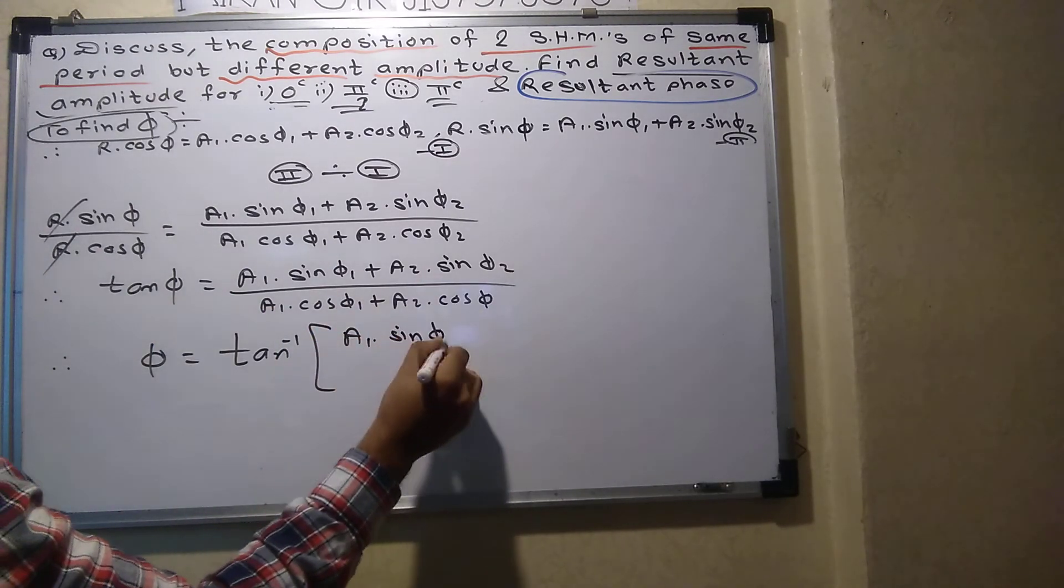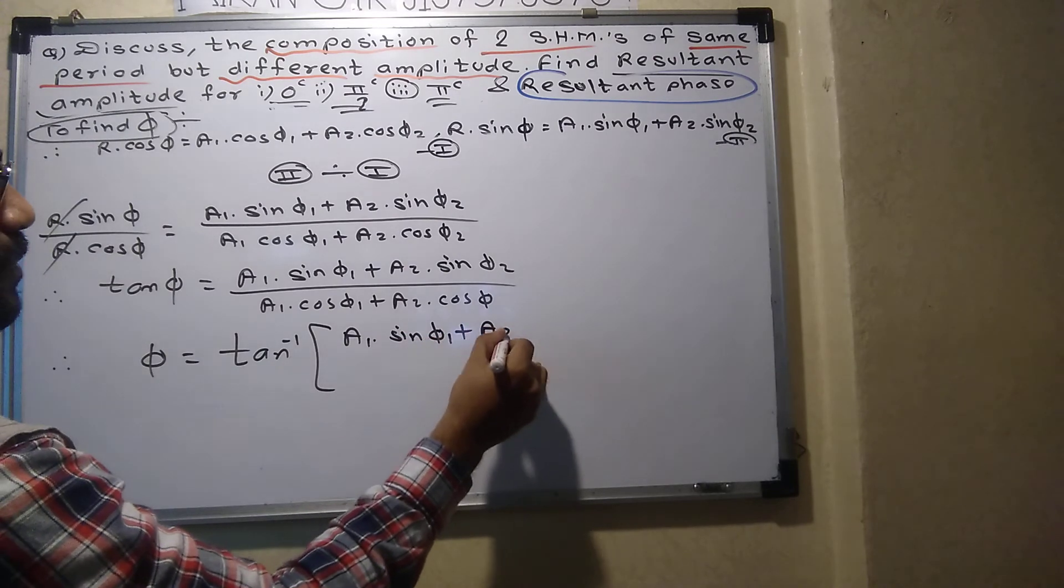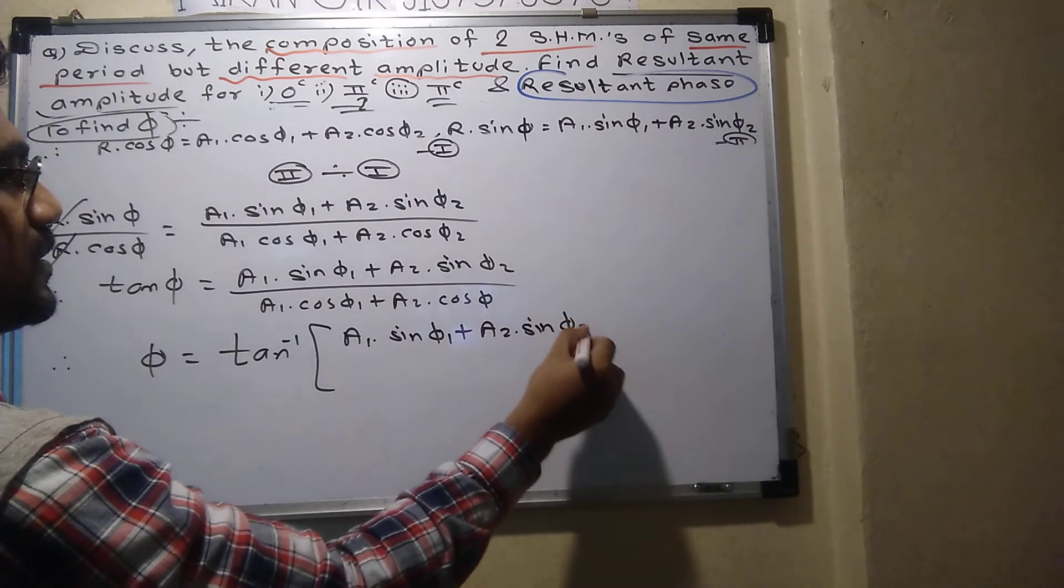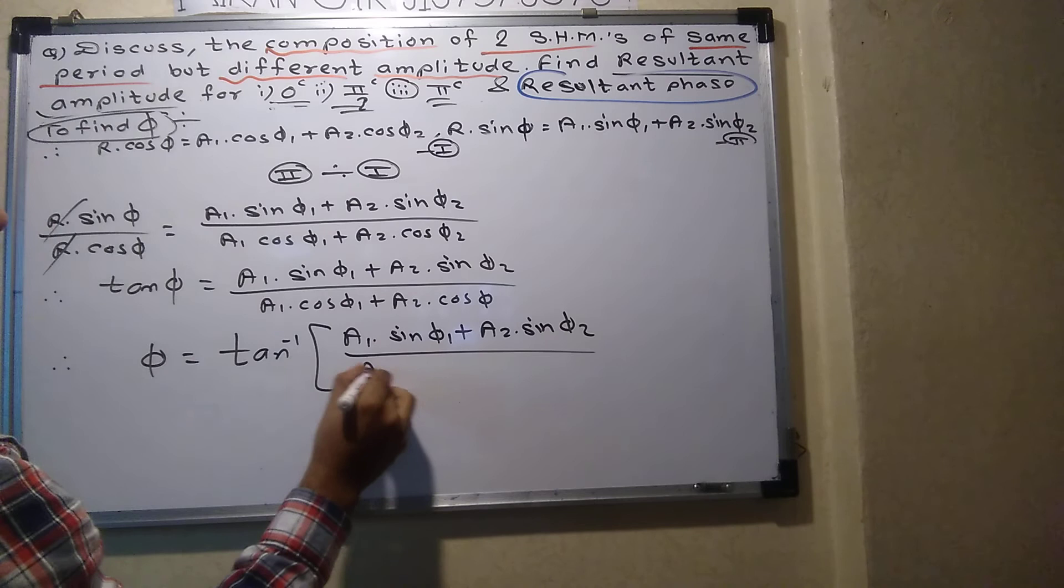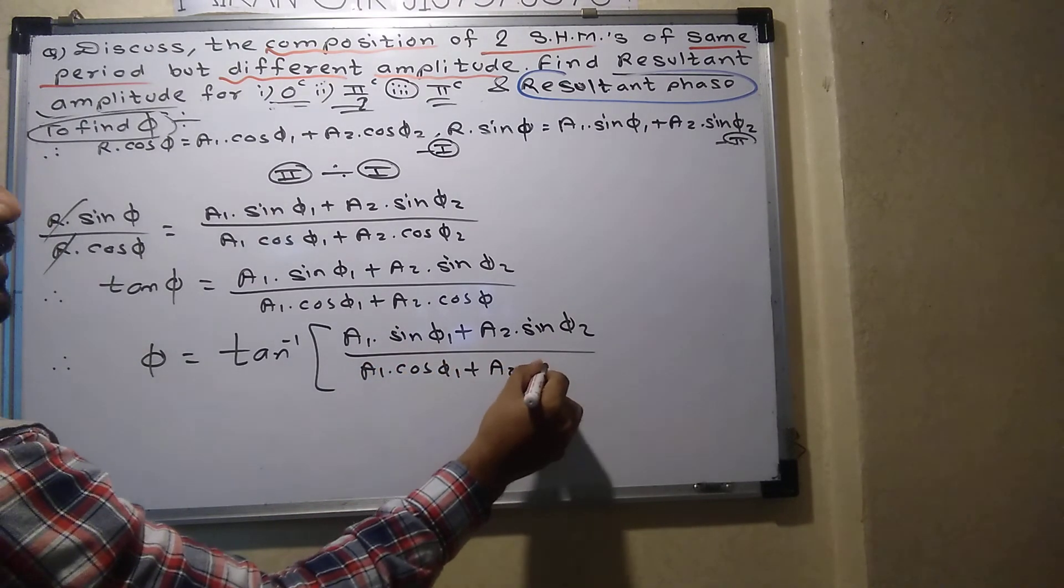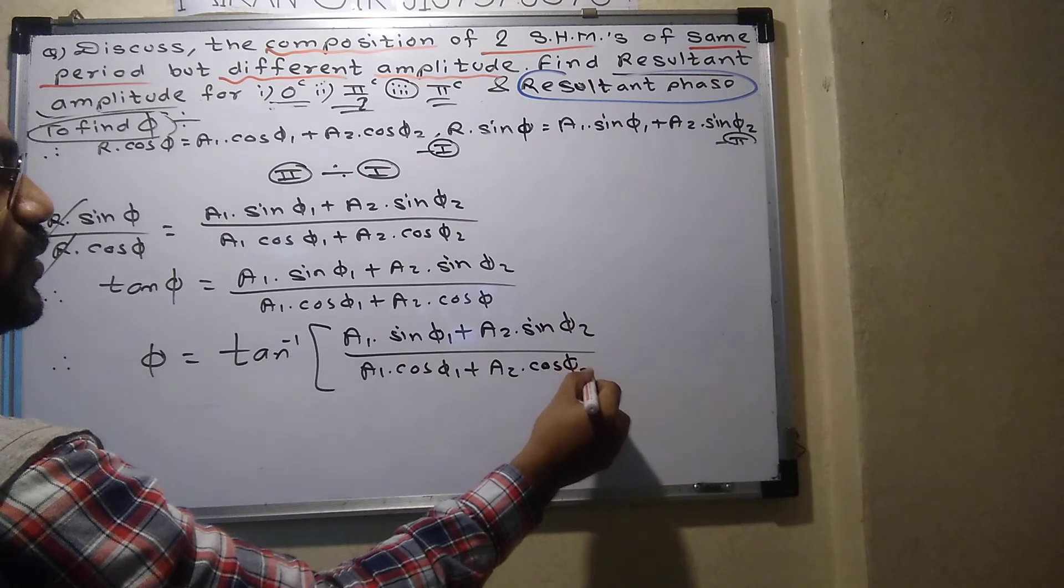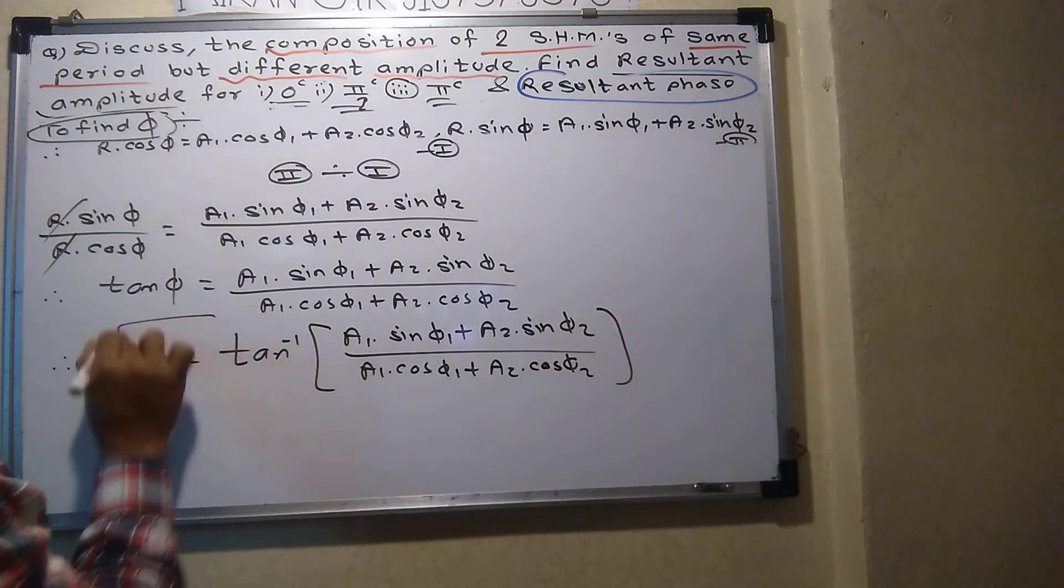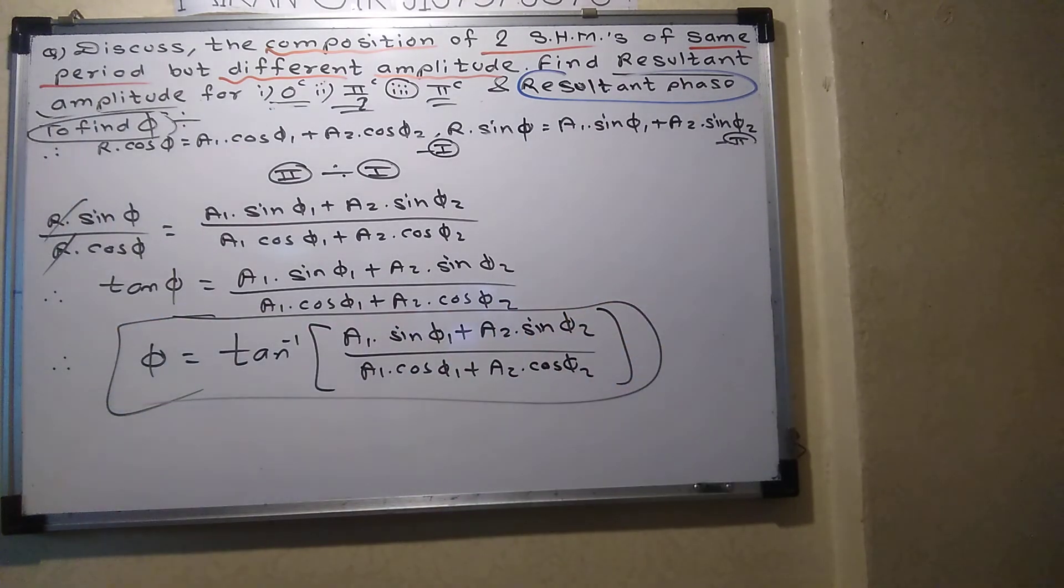A1 sin phi 1 plus A2 sin phi 2 upon A1 cos phi 1, A2 into cos phi 2. This is the final answer of resultant phase. Hope so you understood this particular simple derivation.